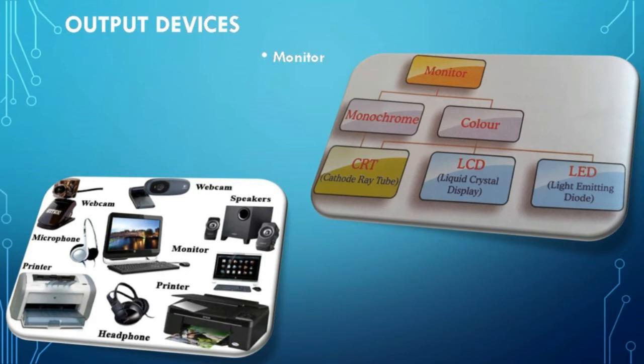First we are going to see the monitors. The monitor is an output device used to display the result. It is also called as screen or visual display unit (VDU). The monitors are of two types: monochrome monitor and color monitor. The color monitor is further classified into three types — CRT (cathode ray tube monitor), LCD (liquid crystal display monitor), and LED (light emitting diode monitor).